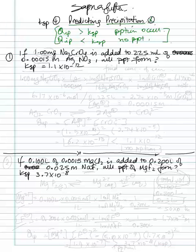Let's look at the first example. If one milligram of sodium chromate is added to 225 milliliters of 0.00015 molar silver nitrate, will a precipitate form? The KSP is given to us. First of all, we're going to find the concentration of ions, because you only have the milligrams given to you.